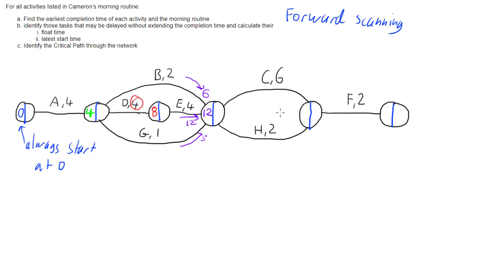Moving on, we look at the next node and do the same thing. Coming down from C: at twelve minutes in we can start C, add on the six minutes C takes, and that gets us to eighteen minutes. Looking at H: H takes two minutes starting at twelve, so fourteen minutes in we can finish H. We've got to pick the biggest number because it's the one that says when we can move on. So F can start eighteen minutes in, and after F is completed - which takes two minutes - we finish at twenty minutes.